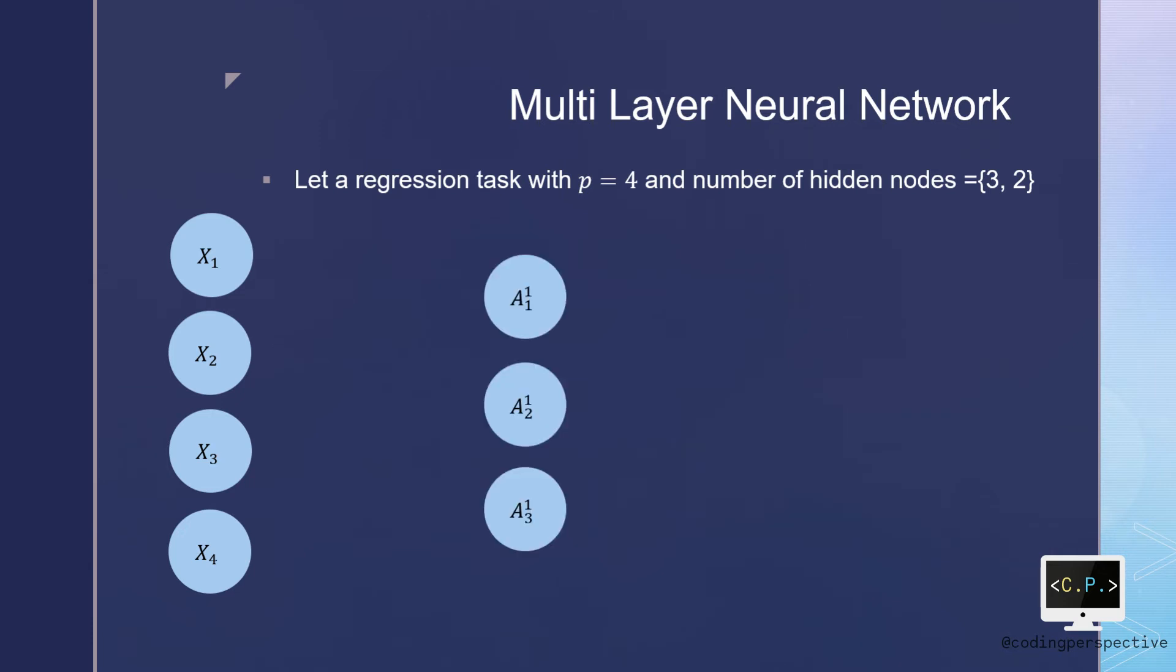Then, in our first hidden layer, we have three hidden nodes where they are called A1,1, A2,1, and A3,1. Note that the superscript stands for the layer number.